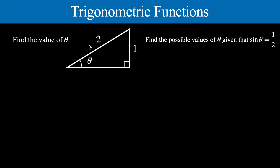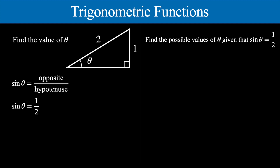You're given a right triangle and asked to find the angle — find the value of theta — and you're given two sides. This side is opposite with relation to this angle and we're also given the hypotenuse. Hopefully you know that you need to use the trigonometric ratios. With the opposite side and the hypotenuse we use the sine ratio: sine of theta equals the opposite over the hypotenuse. The opposite side is 1, the hypotenuse is 2, so we get sine of theta equal to a half.